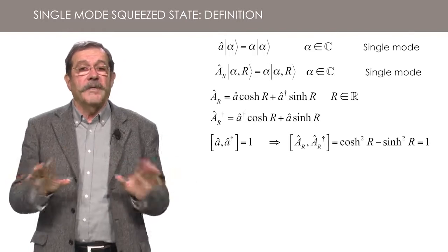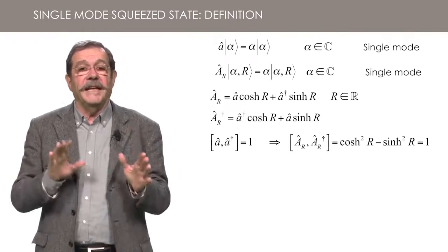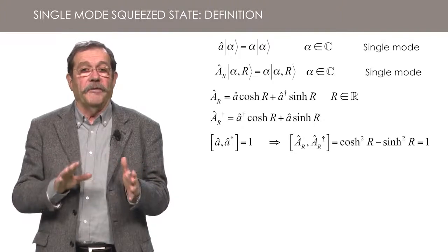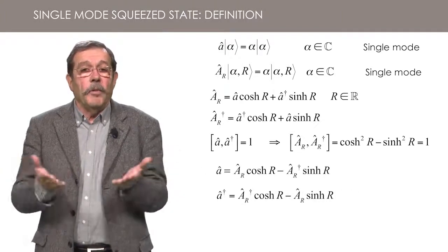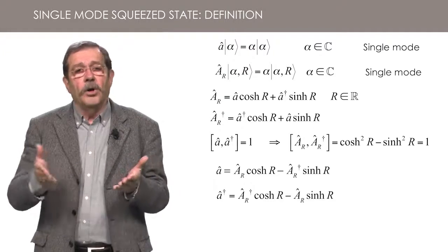This is why we can call AR and A dagger R generalized annihilation and creation operators. Of course, the expressions of AR and A dagger R as a function of A and A dagger can be inverted. We will use these expressions all along this lesson.